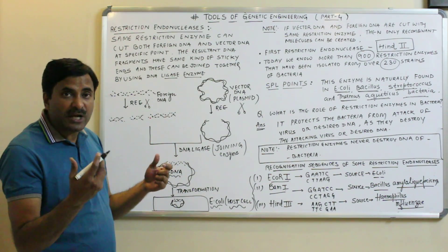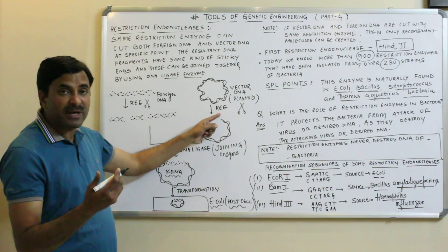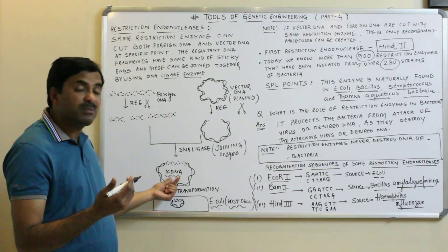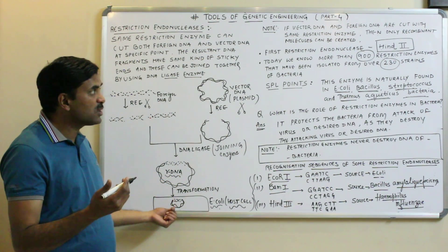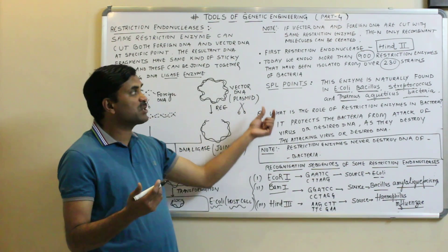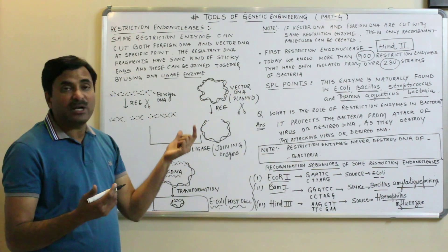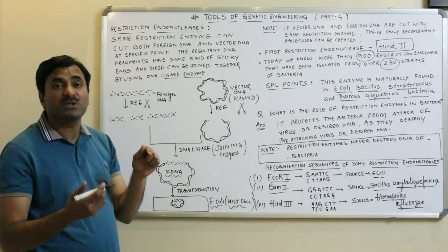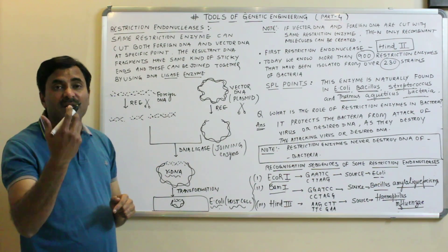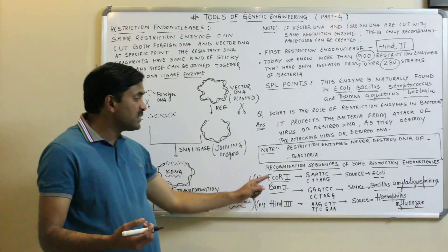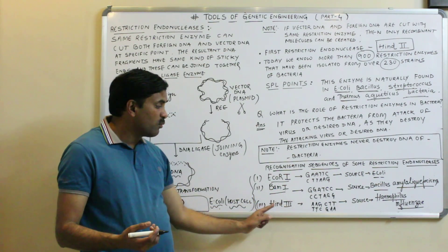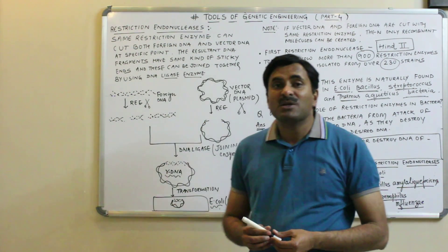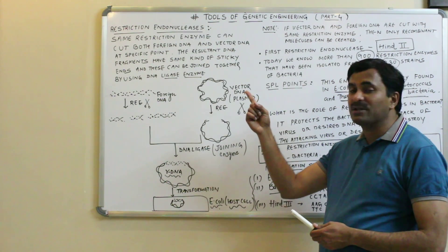So today we have discussed how the restriction endonuclease enzyme cuts the foreign DNA as well as the vector DNA, how the sticky ends of these two DNA fragments are joined together by DNA ligase to form recombinant DNA, and how this recombinant DNA is introduced into the host cell. In the next video — video number five — we will discuss the nomenclature of restriction endonuclease enzymes, covering what EcoRI, BamHI, and HindIII mean. Keep watching, thanks a lot.